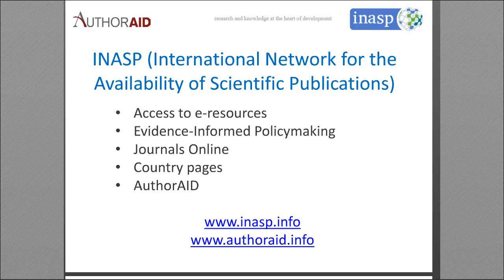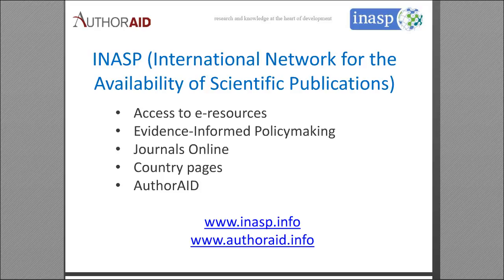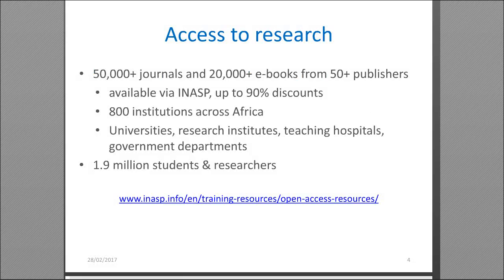Our key programs include working on access to e-resources, informing policymaking with evidence, and Journals Online, which increases the visibility of research done in low- and middle-income countries. We also have country pages explaining the work in each country, and of course AuthorAid. You can see both website URLs on the slide — feel free to visit either of them.